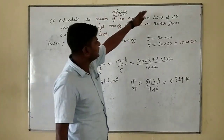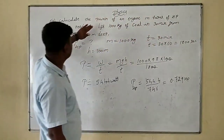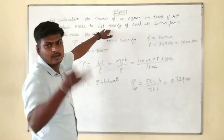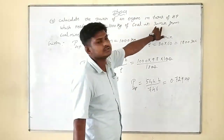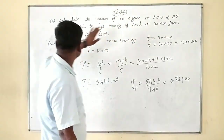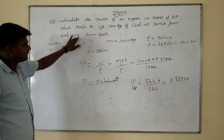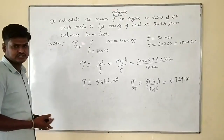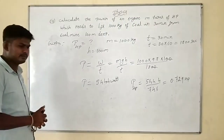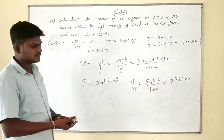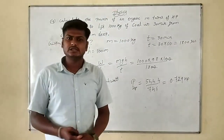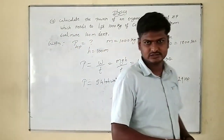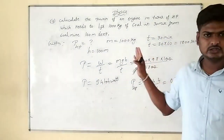So the power is 0.729 HP. To summarize: they gave mass of coal as 1000 kg to lift from a 100-meter mine in 30 minutes. We calculated power as MGH divided by time, then divided by 746 to convert to HP. Yes, clear? This is problem 17.